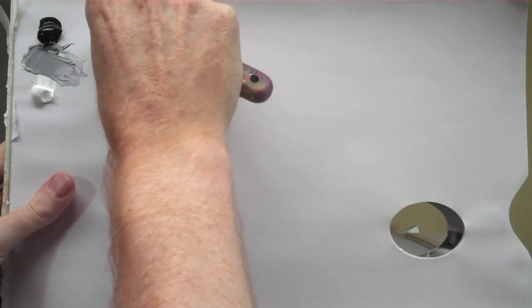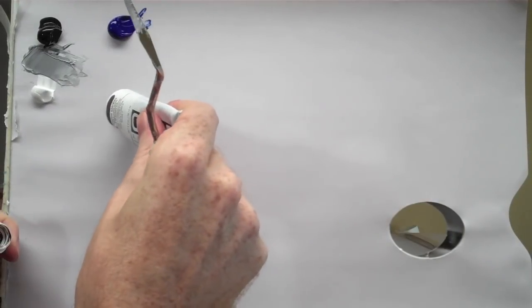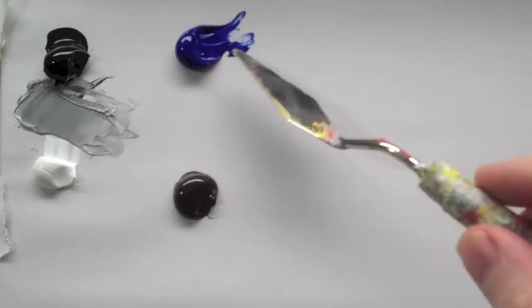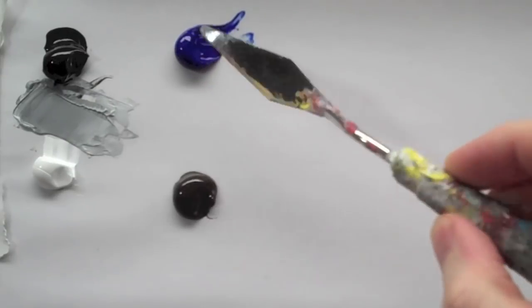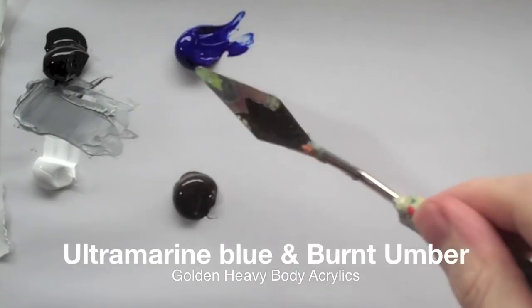You can also make blacks by mixing other colors, so we will start with ultramarine blue and burnt umber. When you are mixing the black between these two, you always need more of the blue than you do of the burnt umber.